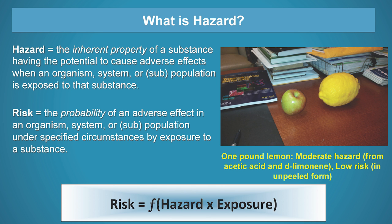Before we dive into chemical hazard assessment, it's important to reflect upon what hazard is—and it's not a hazard versus risk argument. Hazard is the inherent property of a substance that has the potential to cause adverse effects when an organism is exposed to that substance. Risk is the probability of an adverse effect in an organism under specified circumstances of exposure—the probability of harm.